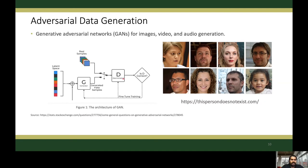In GAN architecture, there are two neural networks that compete with each other to optimize their objectives during training: the generator and the discriminator. The discriminator distinguishes real samples from generated fake samples. The generator confuses the discriminator as much as possible by convincing it that the generated samples come from the real distribution. Ultimately, the generator becomes capable of generating samples that are very similar to the real samples.